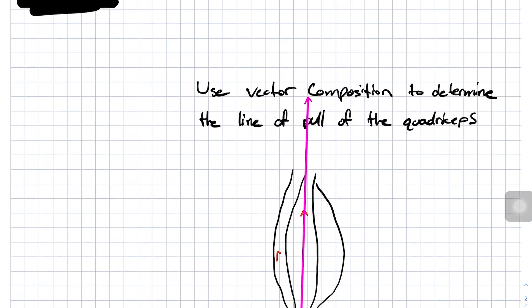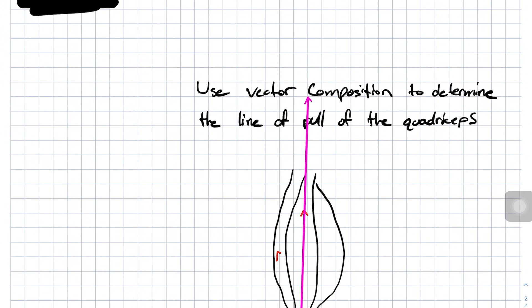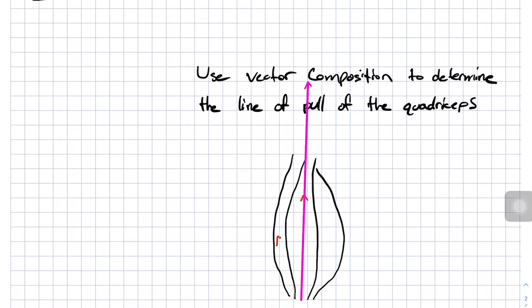So there you have it, vector composition in two different ways. And we can use vector composition to summate the forces and find the resultant magnitude and angle of our vectors. So we've now learned vector composition, vector resolution, and if you want to continue learning more about biomechanics and vectors, head on over to this video right over here, looking at the properties of force.